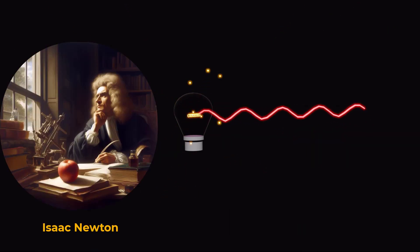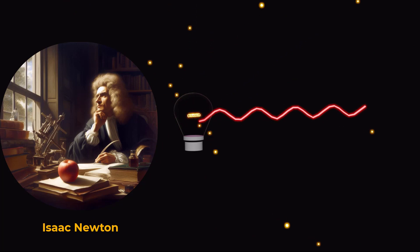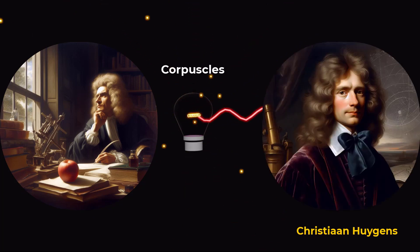In the late 17th century, Sir Isaac Newton proposed that light consists of particles called corpuscles, while Christiaan Huygens proposed that light behave as a wave.